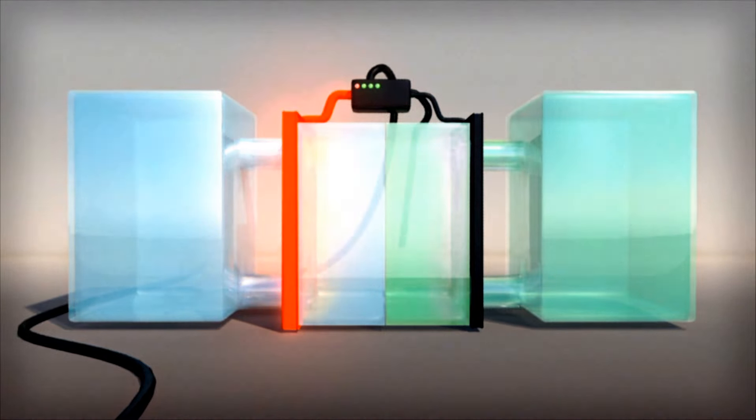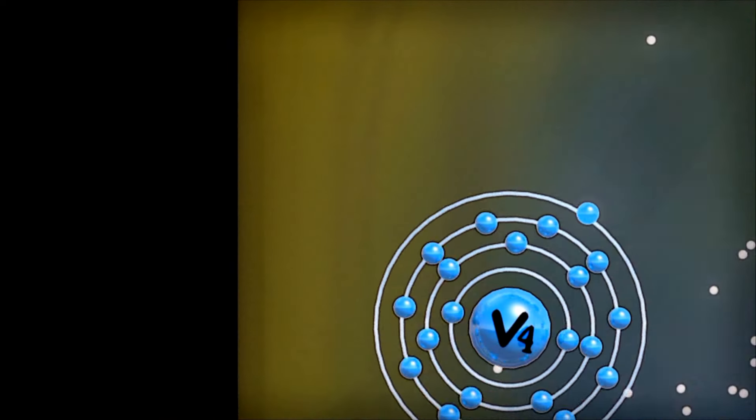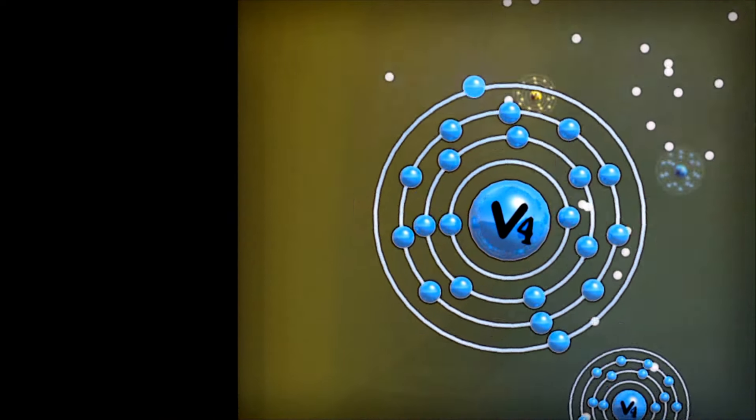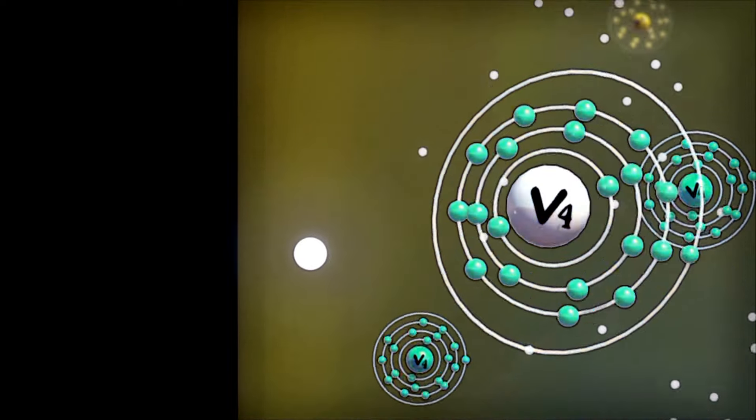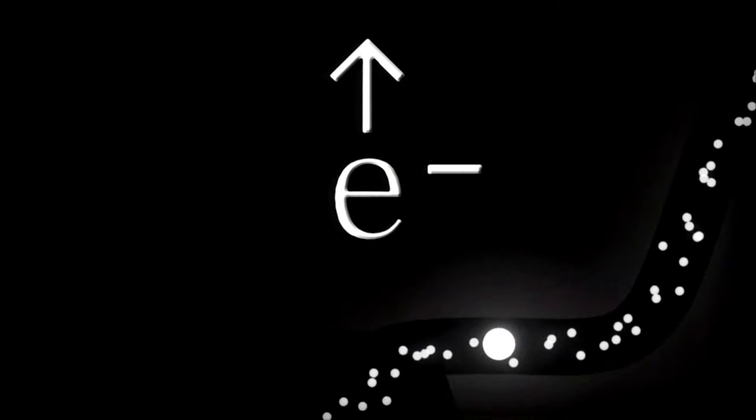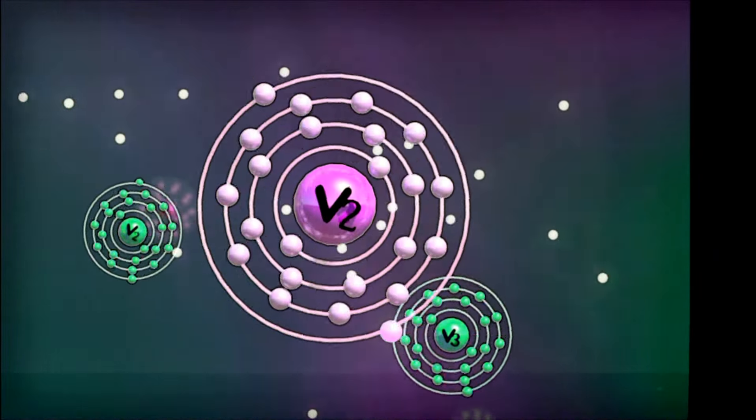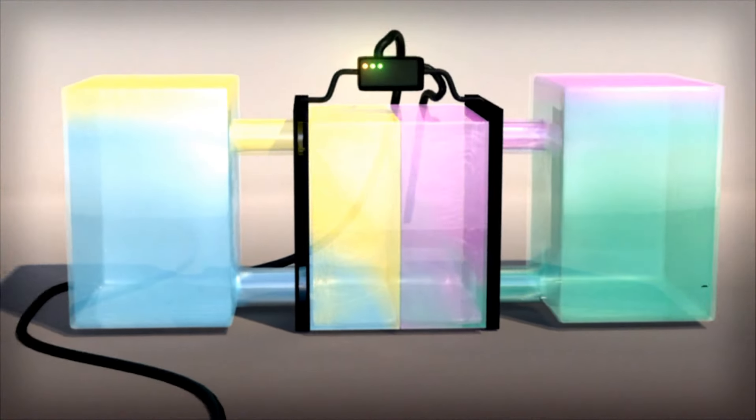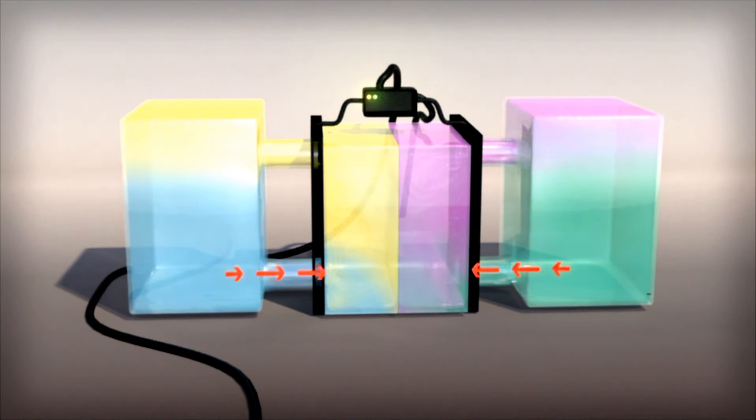When the battery is being charged, the vanadium 4-plus ions in the uncharged positive electrolyte give up an electron. The electrons travel up the current collector and out from the positive half of the cell stack. They then enter the current collector of the negative half of the cell stack and jump onto the vanadium 3-plus ions in the uncharged negative electrolyte, converting it into a vanadium 2-plus solution.